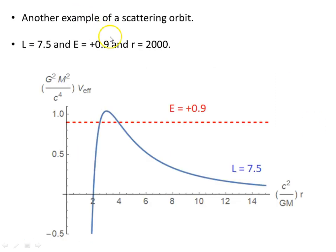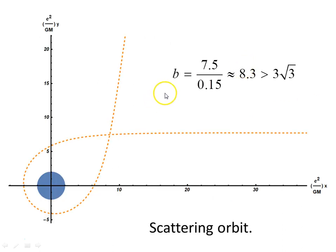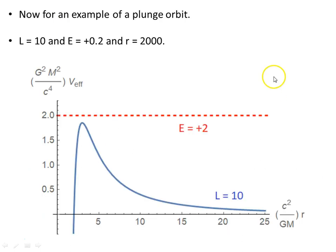Another example of a scattering orbit. Set the angular momentum, 7.5, and the energy plus 0.9, again start at 2,000. Here we go, E is a larger value, and let's see what we get now. When we do that, we get this orbit here. In it comes, around the Schwarzschild mass, and scatters up again, back off, out to infinity. Here b is 7.5 over 0.15, it's still greater than 3 times the square root of 3. So that condition is satisfied, another scattering orbit, different type of orbit.